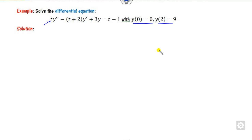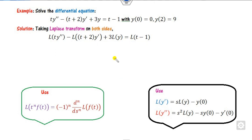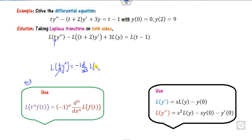What you can do is simply take the Laplace transformation of both sides. Always remember: whenever there is a multiplication by T, we apply the rule from Laplace transformation. If you compare, the value of N is 1. So, the Laplace transformation of this term with T times the second derivative gives minus 1 times d/ds of L{y double dash}.